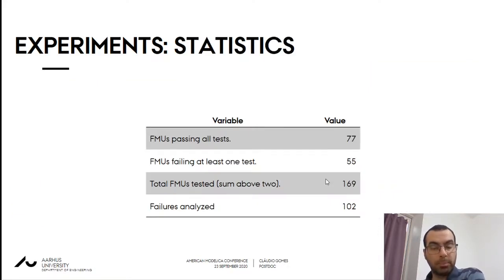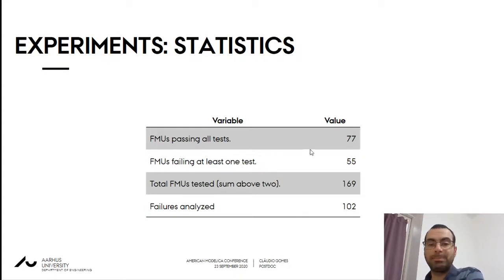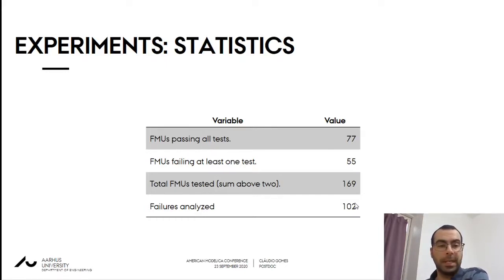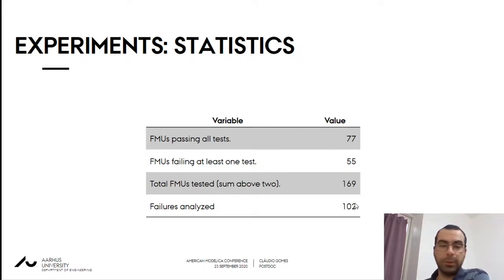These are the results. Overall, from about 169 FMUs, 77 passed all tests and 55 failed at least one test. Since we had a very large number of failures — remember we were running a thousand tests per FMU — we had to bundle them into equivalence classes. Two tests are considered equivalent if they failed at the same operation on the same instance of the same FMU. We ended up with about 100 failures that we could analyze manually and individually.